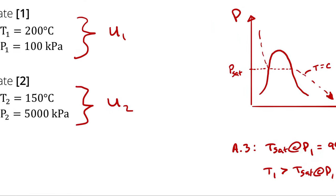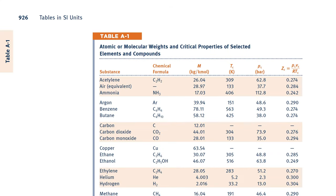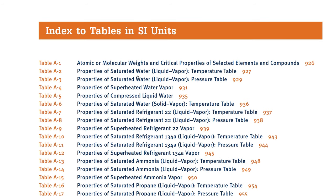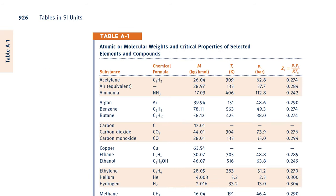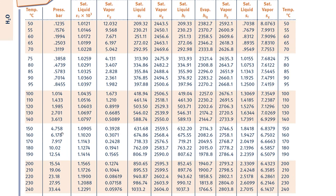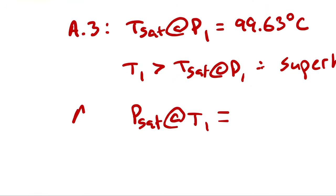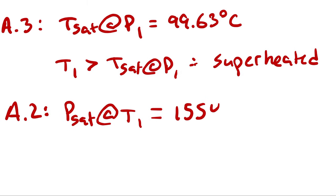If I approach this the other way, I would look up the saturation pressure corresponding to my temperature at state 1 from table A2, since table A2 contains properties of saturated water in even increments of temperature. Finding 200 degrees Celsius in table A2, the saturation pressure is 15.54 bar. Converting: 15.54 bar equals 1554 kilopascals. So the saturation pressure corresponding to our temperature is 1554 kilopascals.